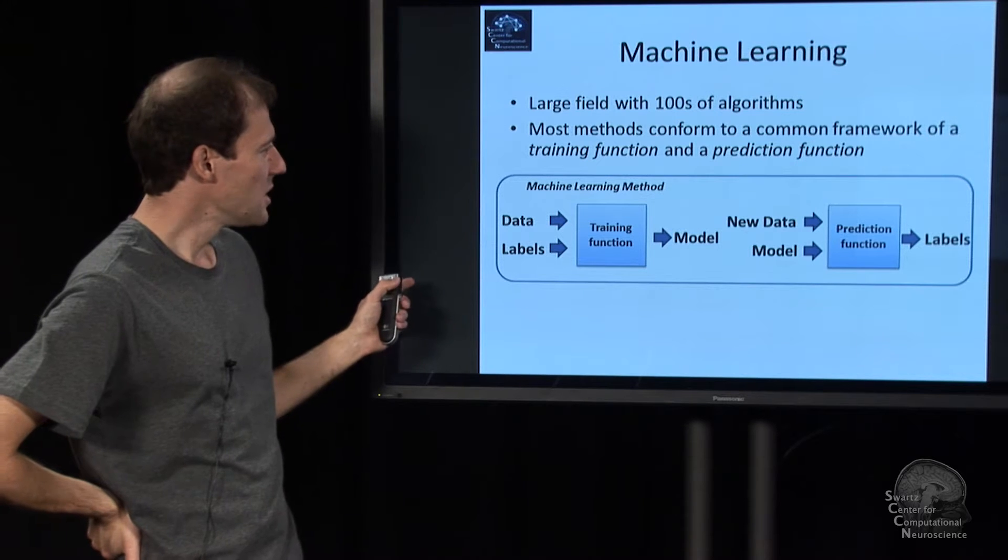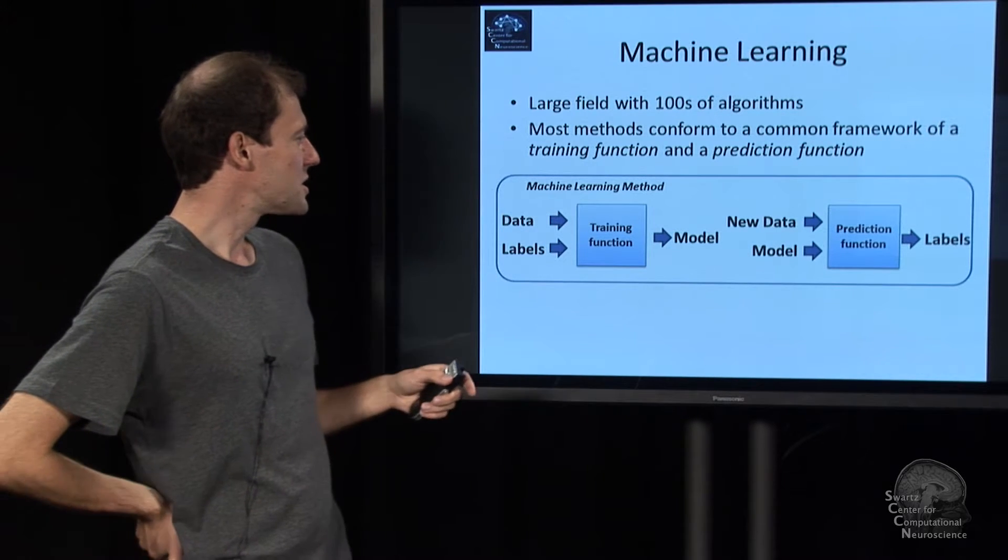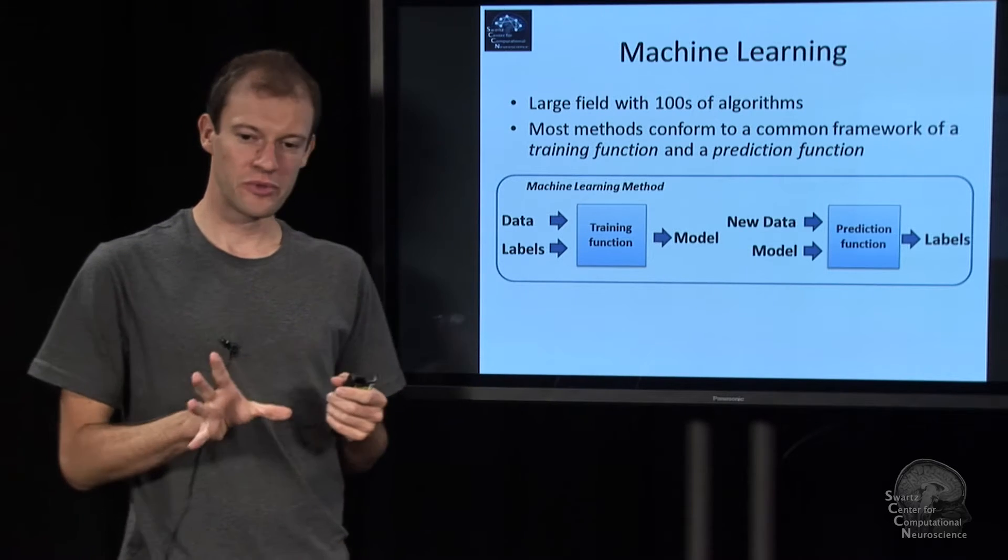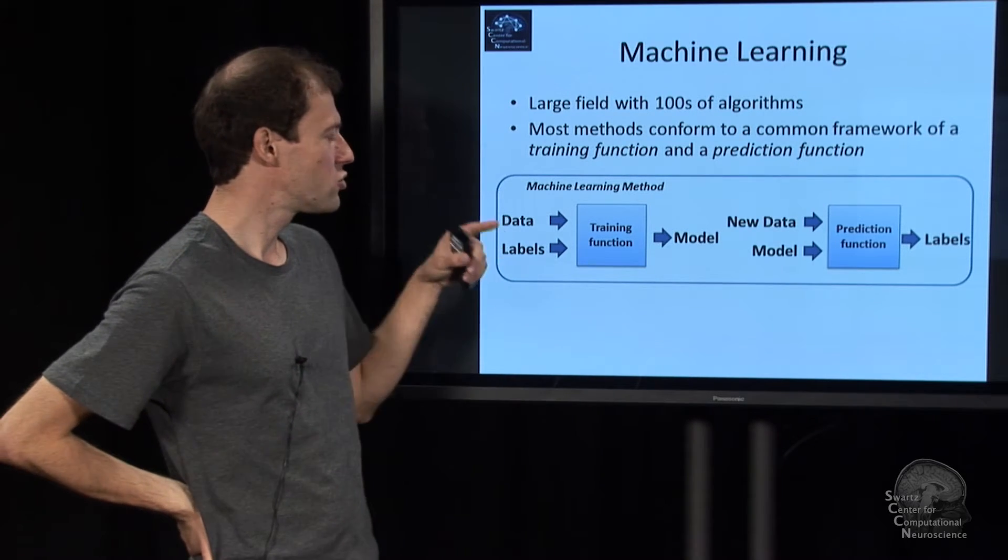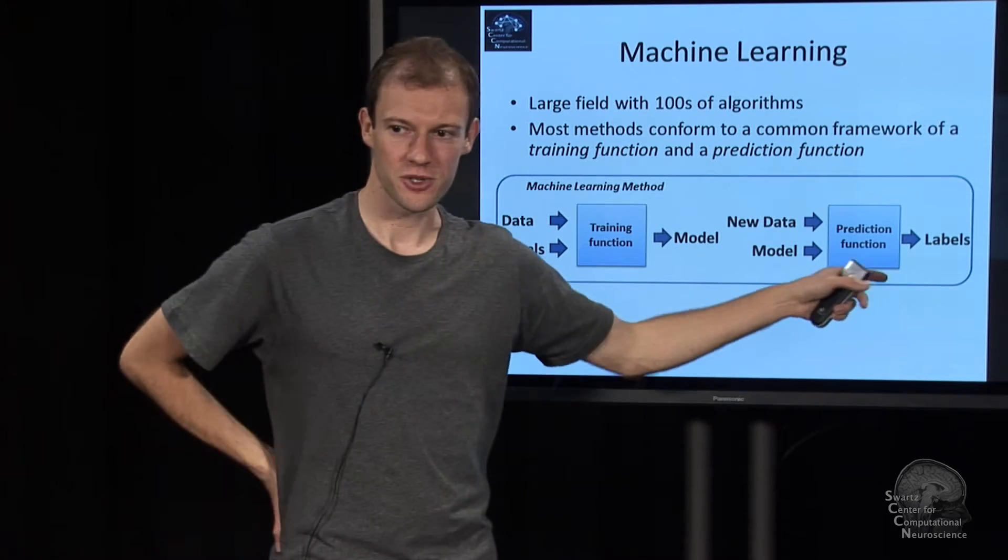So we say a machine learning method, or most of them, especially the interesting ones for BCI, consists of two functions, a so-called training function and a prediction function.